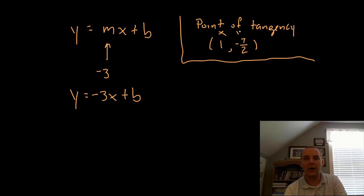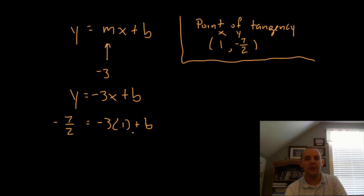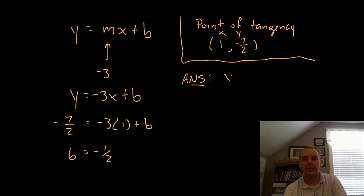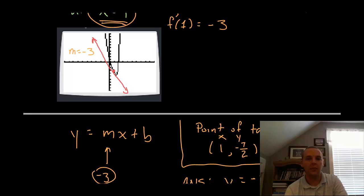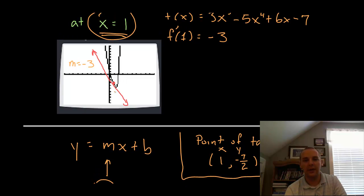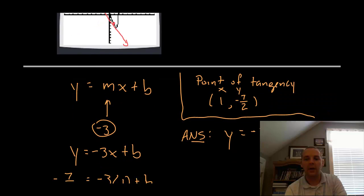This is an (x, y) location we know something about. When we plug in 1 for x we expect to get negative 3.5 out for y. Setting up that equation gives us enough information to reveal what b is — b is going to be negative one-half. So the equation of the tangent line is y equals negative 3x minus one-half. The m was negative 3 as we found from the derivative, and looking back at the graph that looks pretty realistic.